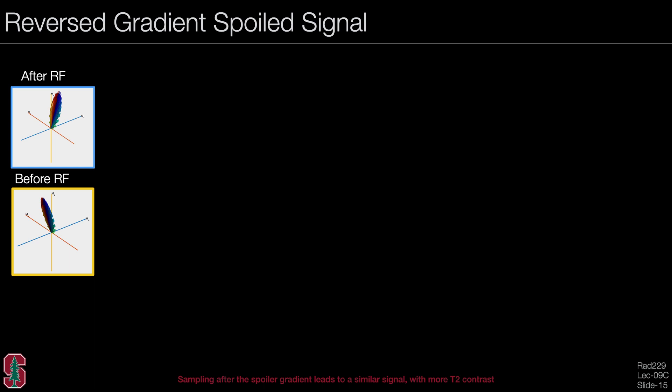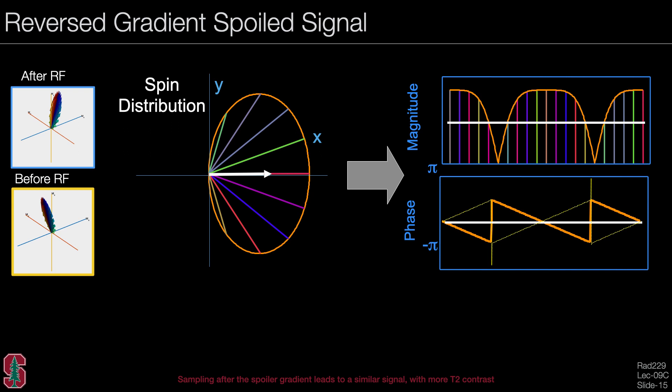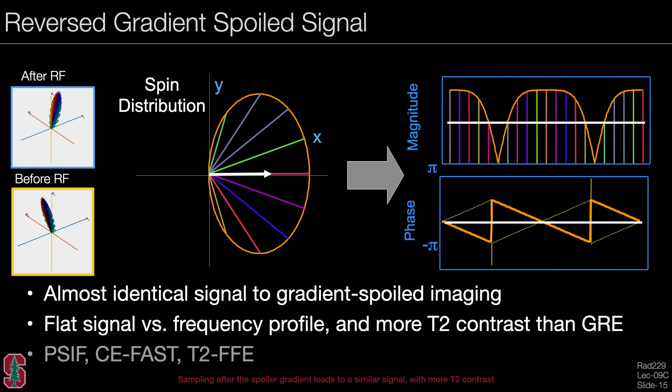Looking at the EPG states for reverse gradient spoiling: just after the RF we have an elliptical distribution, and just before the RF we also have an elliptical distribution. The signal magnitude and phase are shown, with the orange line indicating the linear phase signal and the white line the averaged signal. The yellow dotted line is the signal immediately after the RF pulse. We get a flat signal versus frequency profile but more T2 contrast than GRE. This sequence is known as PSIF (FISP reversed), CE-FAST, or T2-FFE (T2 fast field echo).